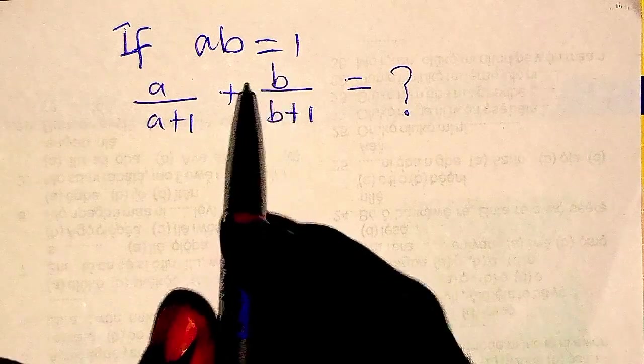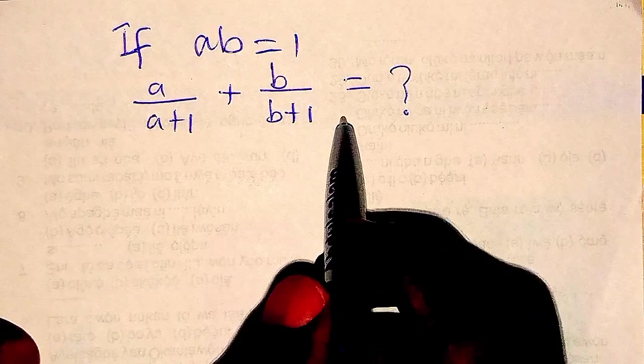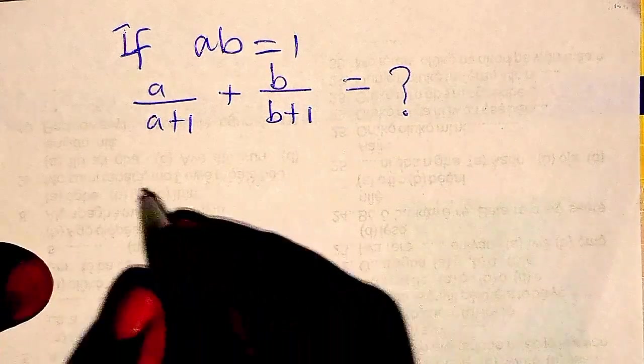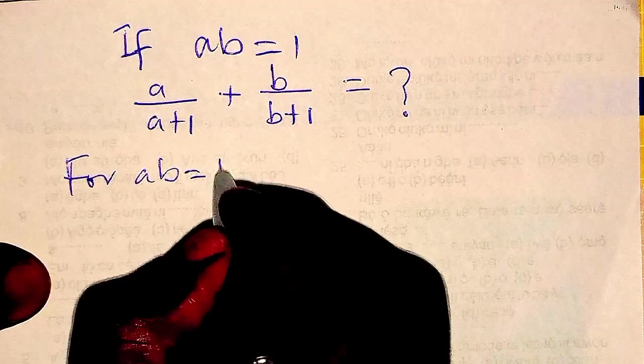If AB equals 1, A over A plus 1 plus B over B plus 1 equals what? So now for AB to be equals 1.